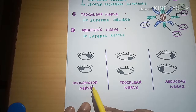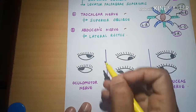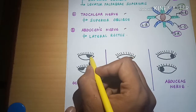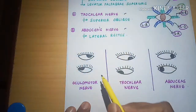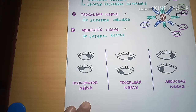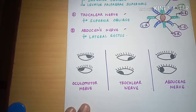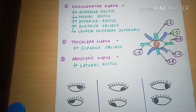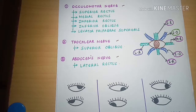These are the diagrams for the oculomotor nerve, trochlear nerve, and abducens nerve. That's all for the abducens nerve. We will continue with the next cranial nerve in the next part of the video, so please like, share, and subscribe to the channel and press the bell icon for more notifications.